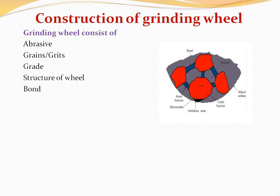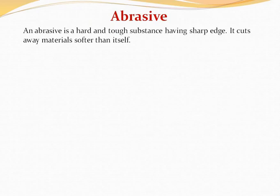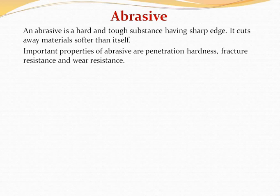First हमारे पास है abrasive। An abrasive is a hard and tough substance having sharp edges. It cuts away materials softer than itself. Abrasive hard and tough substance होता है जिसका edge बहुत ही sharp होता है और यह अपने से soft material को cut करता है। Abrasive के कुछ properties हैं: penetration hardness, fracture resistance and wear resistance.